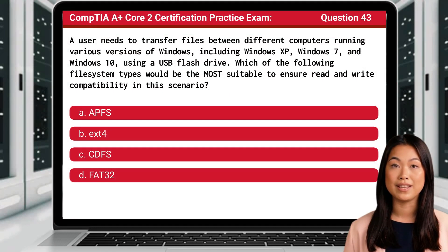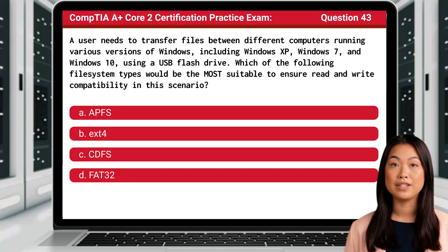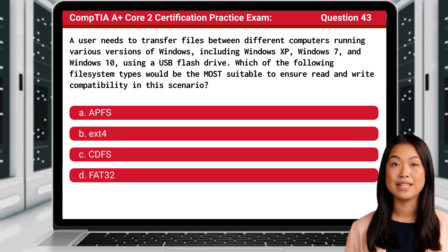Question 43. A user needs to transfer files between different computers running various versions of Windows, including Windows XP, Windows 7, and Windows 10, using a USB flash drive. Which of the following file system types would be the most suitable to ensure read-and-write compatibility in this scenario?